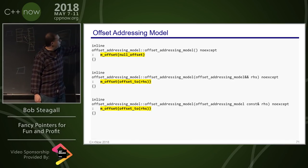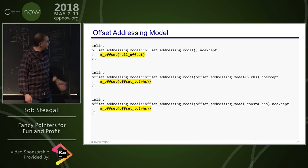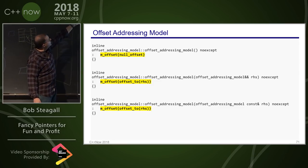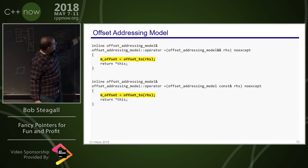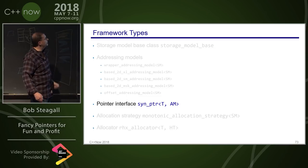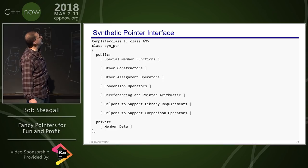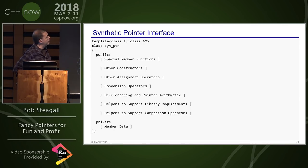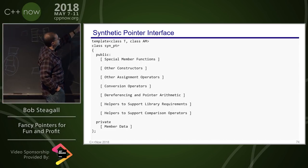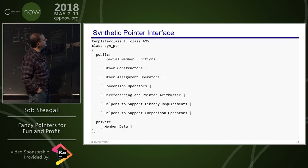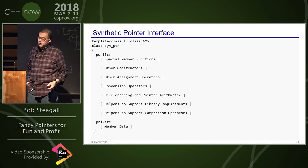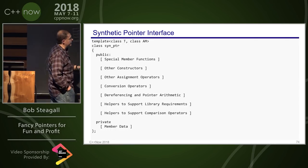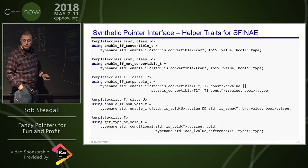The pointer interface (synputter) is the most complex part. It has type definitions including a rebinder required by std::pointer_traits for allocator-aware containers, difference_type, size_type, element_type/value_type, a reference typedef (void if T is void, T& otherwise), and an iterator_category for random access iteration. Helper traits support SFINAE: one trait checks if T* is convertible to U*, another (enable_if_comparable_to_T) enables only sensible comparison operations, and enable_if_non_void_T prevents void pointers from being dereferenced.